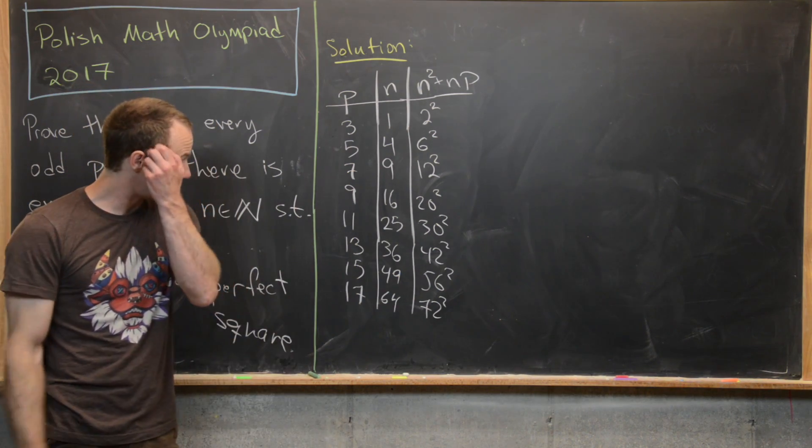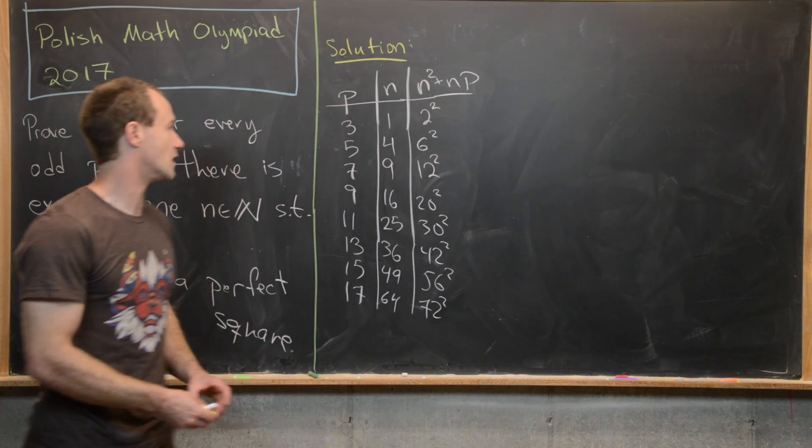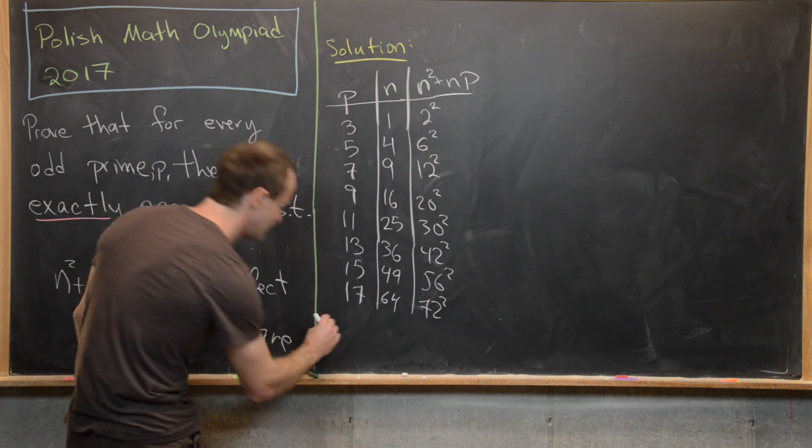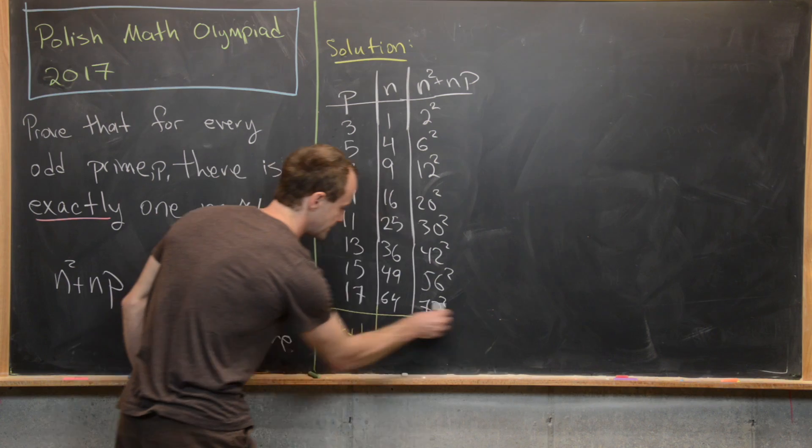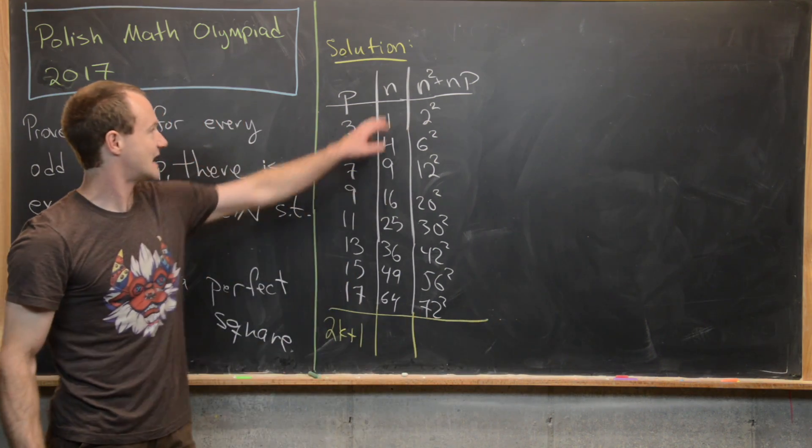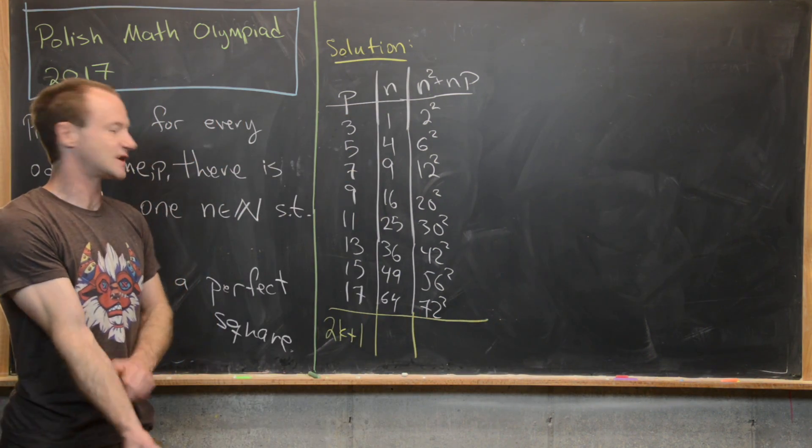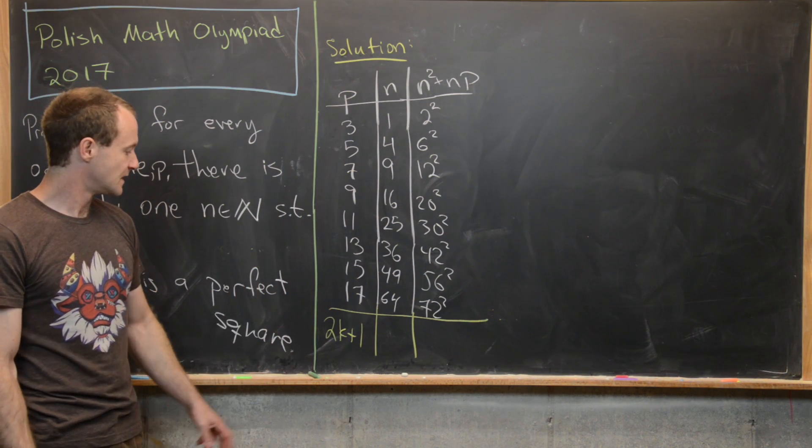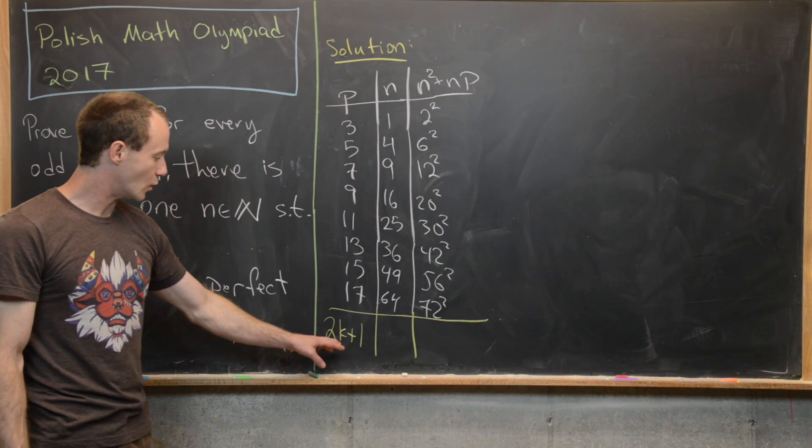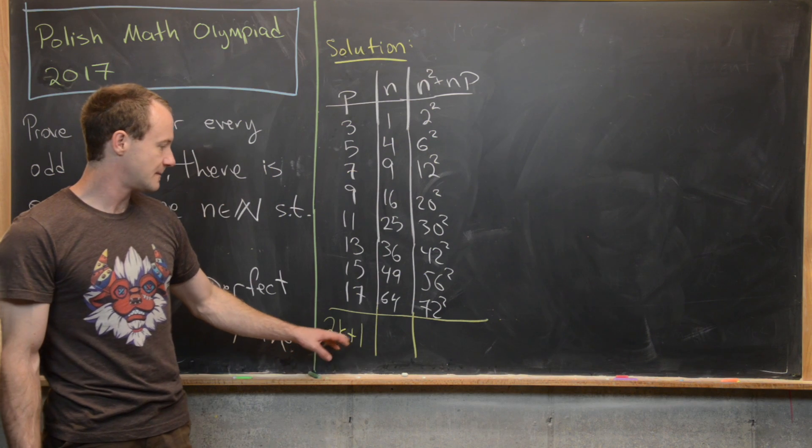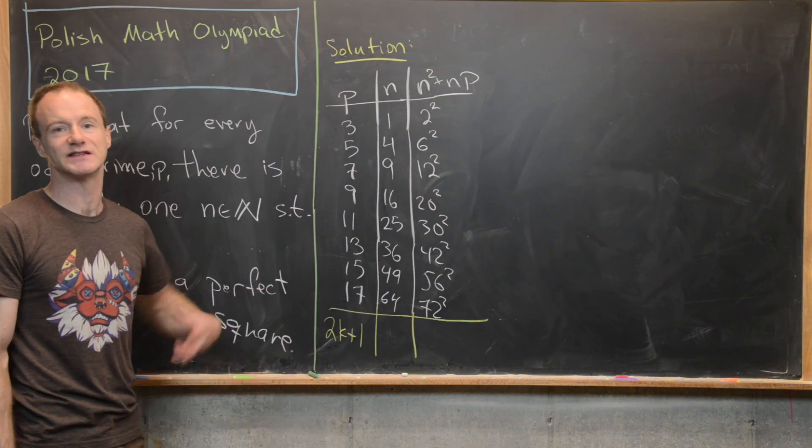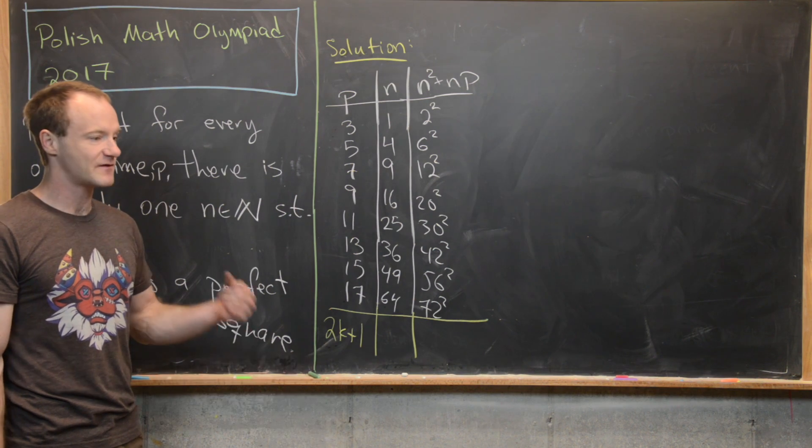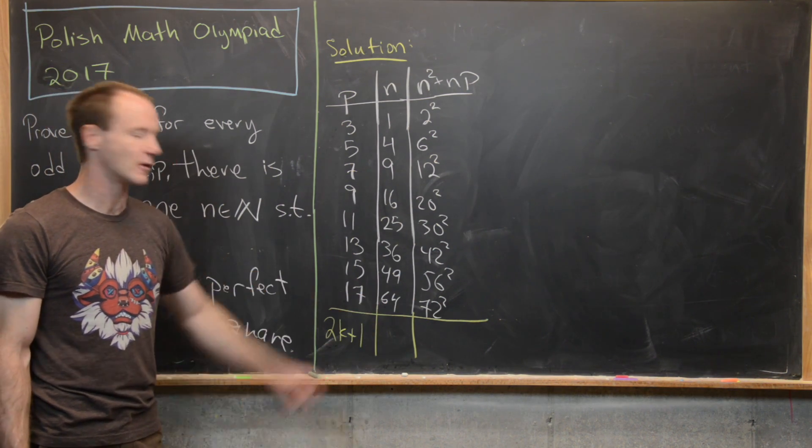From this we can get an idea for what's going on. Notice if I can write p as any odd number, so 2k plus 1, notice that we can guess our value of n based off this value of p, this odd number. Notice this thing looks like 1 less than 2k plus 1, and then you take half of it and you square it. So notice 17 minus 1 is 16, half of that is 8, squared is 64, that works.